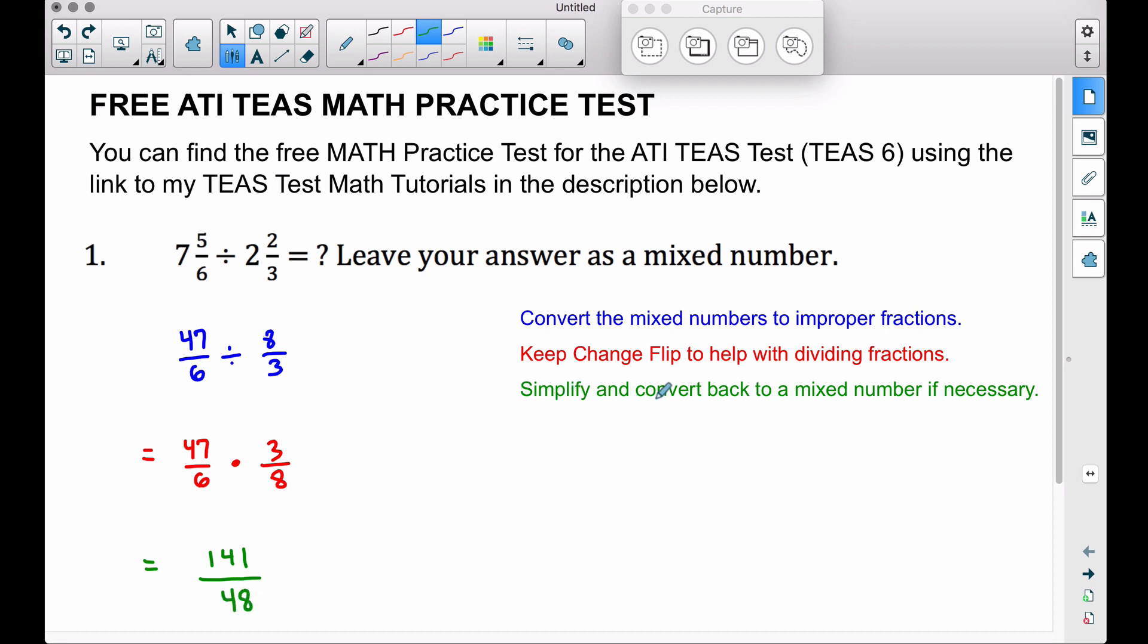Now do the same thing to your denominators, bottom times bottom, 6 times 8 is 48. And now we want to simplify this and convert back to a mixed number if necessary. We're definitely going to have a mixed number here since this answer, this solution, this quotient that we have here is an improper fraction.